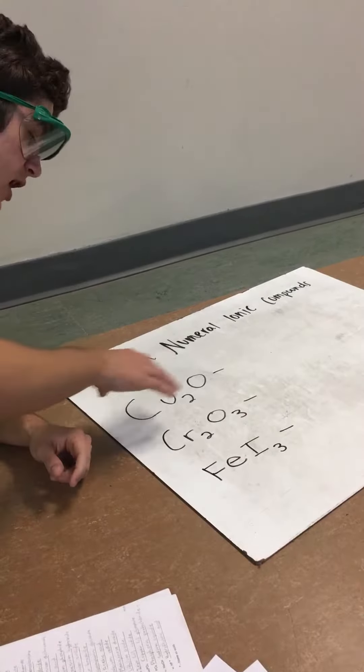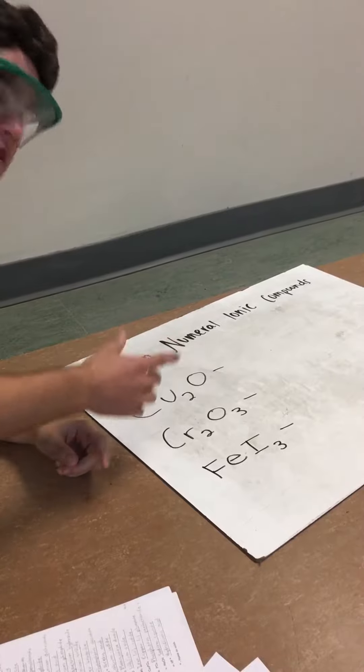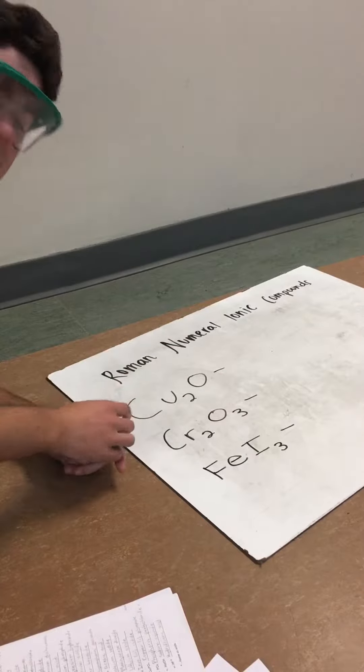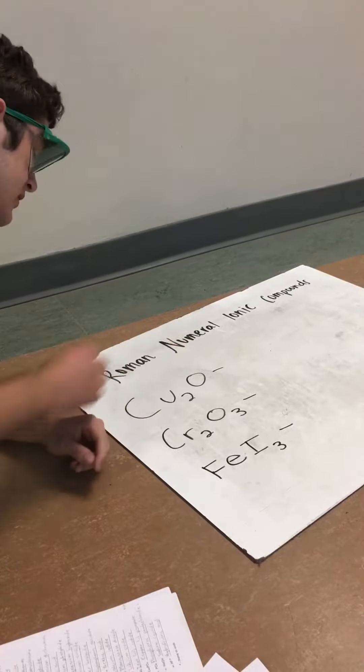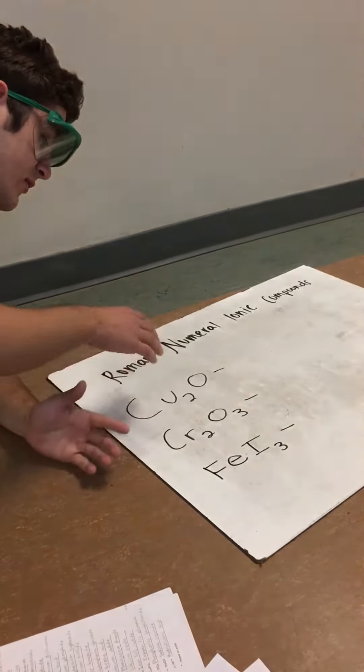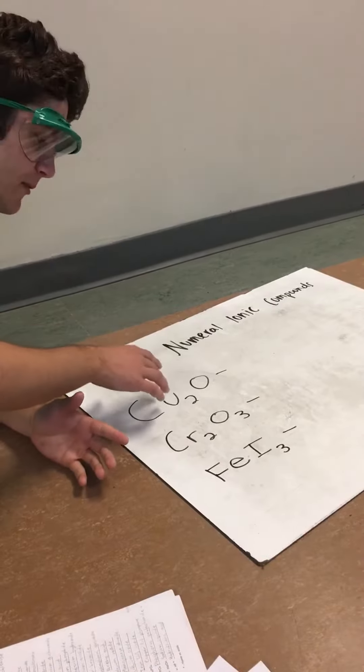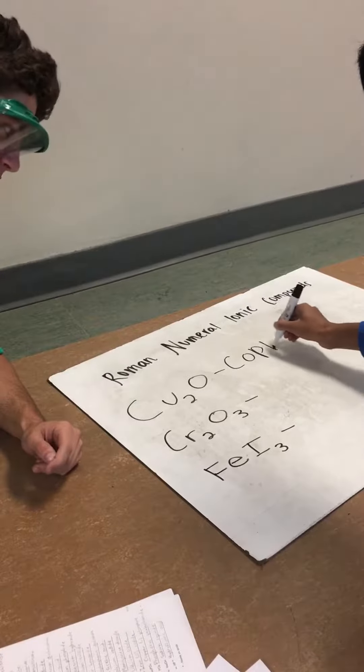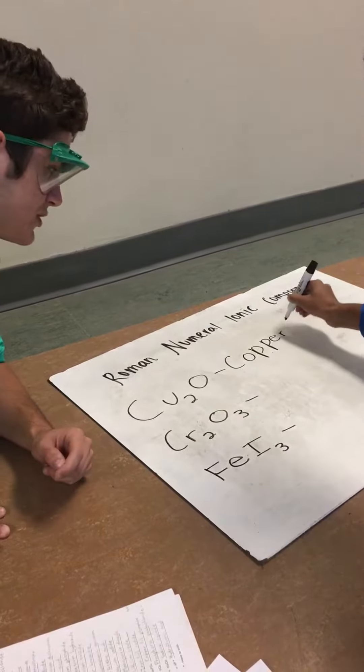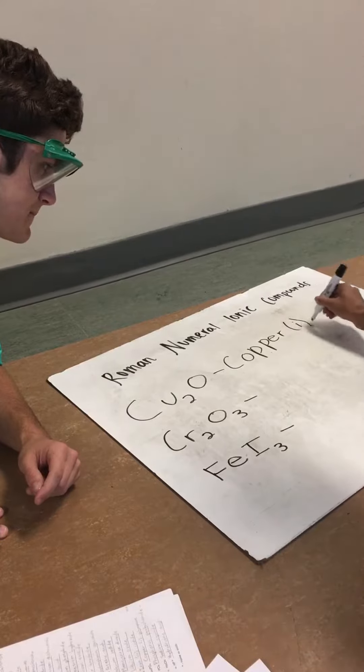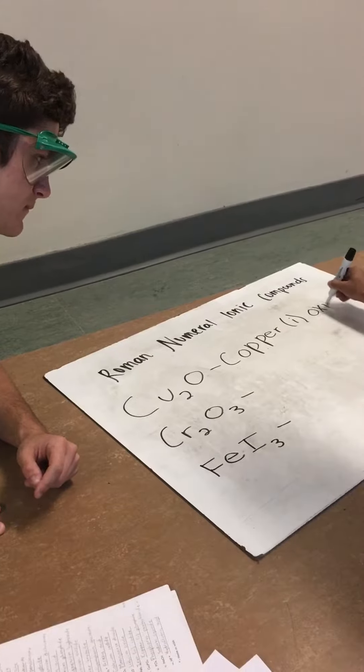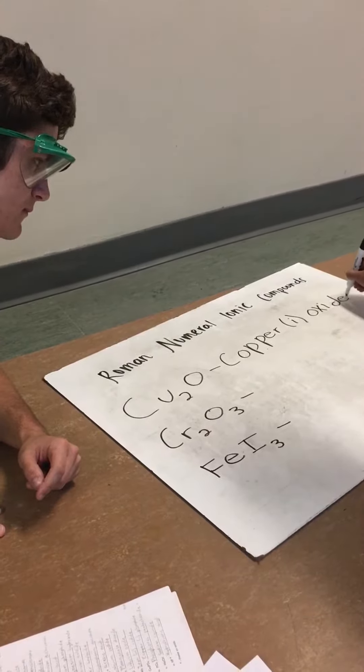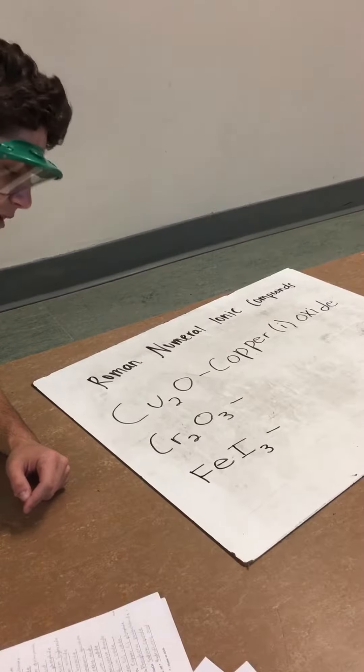So for example, copper would be a charge of positive 1, because we already know the charge of oxygen, which is minus 2. Therefore, in order to make this a complete bond, we have to have plus 2 of copper and minus 2 of oxygen. And don't forget to add the ion to the end of your chemical equation. In parentheses, you always put the charge of the copper cation.